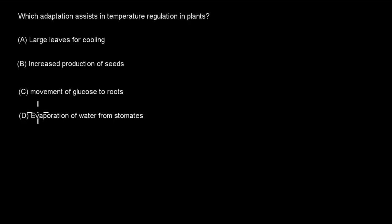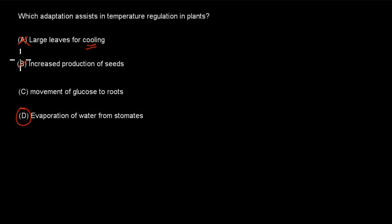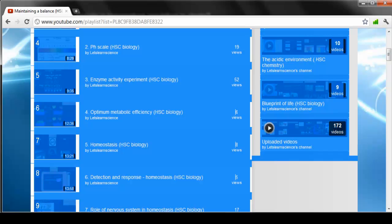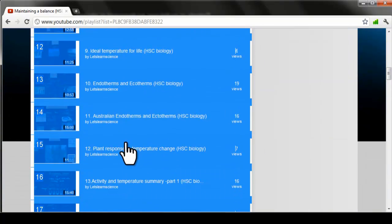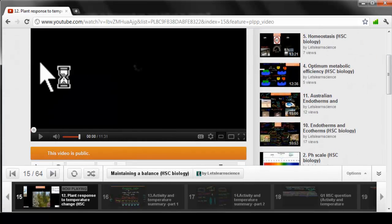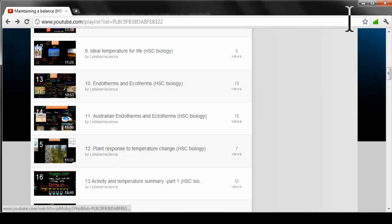The correct answer is D. A is incorrect — large leaves don't help with cooling; they actually help absorb more sun, so they would heat up the plant more. Increased production of seeds is random and unrelated. Movement of glucose to roots has nothing to do with temperature regulation. Evaporation of water from stomata — just like sweating in humans — cools the plant. This is covered in video number 12: Plant Responses to Temperature Change.